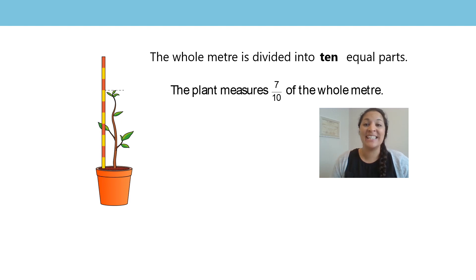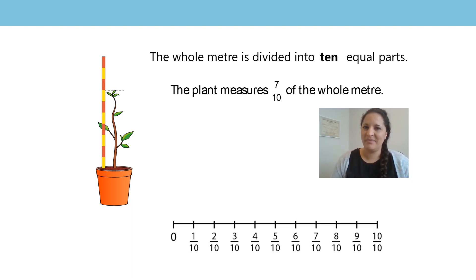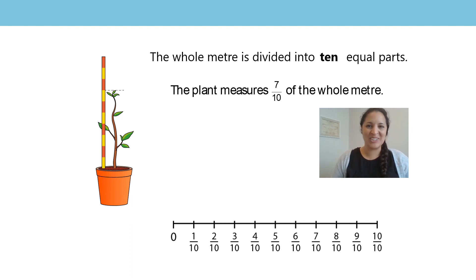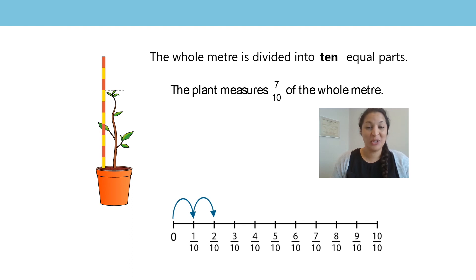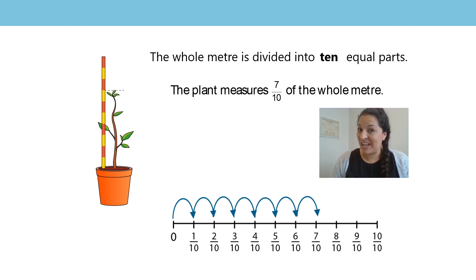Now let's write the fraction as a number on a number line. How many equal parts would our number line need? Well, it would be ten equal parts. Now let's show our fraction on the number line — can you shout stop when we reach our fraction? Count up with me and stop when we reach our fraction. Remember to start from zero. Ready? Let's go. Zero, one-tenth, two-tenths, three-tenths, four-tenths, five-tenths, six-tenths, seven-tenths. Did you shout stop? Well done. Now let's write our fraction: seven-tenths.